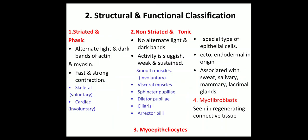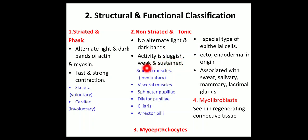Here comes the structural and functional classification. First, there are striated and phasic muscles; second, non-striated and tonic muscles; third, myoepitheliosites; and fourth, myofibroblasts. In the striated and phasic muscles, alternate light and dark bands of actin and myosin filaments are present. These are fast and strong contracting muscles — for example, skeletal muscles which are voluntary and cardiac muscles which are involuntary. In non-striated and tonic muscles, no alternate light and dark bands are present.